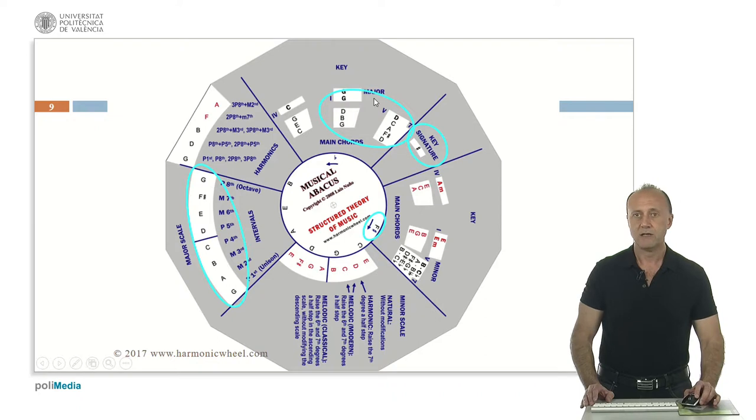The tonic chord G major whose notes are G, B, D and the dominant 7th chord D dominant 7th whose notes are D, F sharp, A, C.